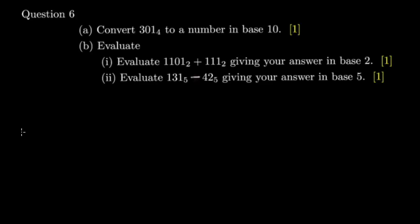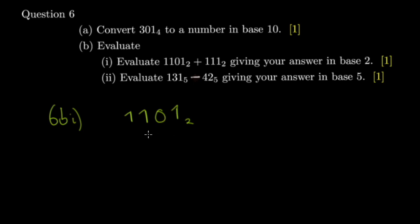Let's move to the second part, 6b item one. It says evaluate: you have 1101 base 2 to be added with 111 base 2. Give your answer in base 2 — don't convert to base 10, add, and then convert back to base 2, because that would take too much time. It's all about strategy.